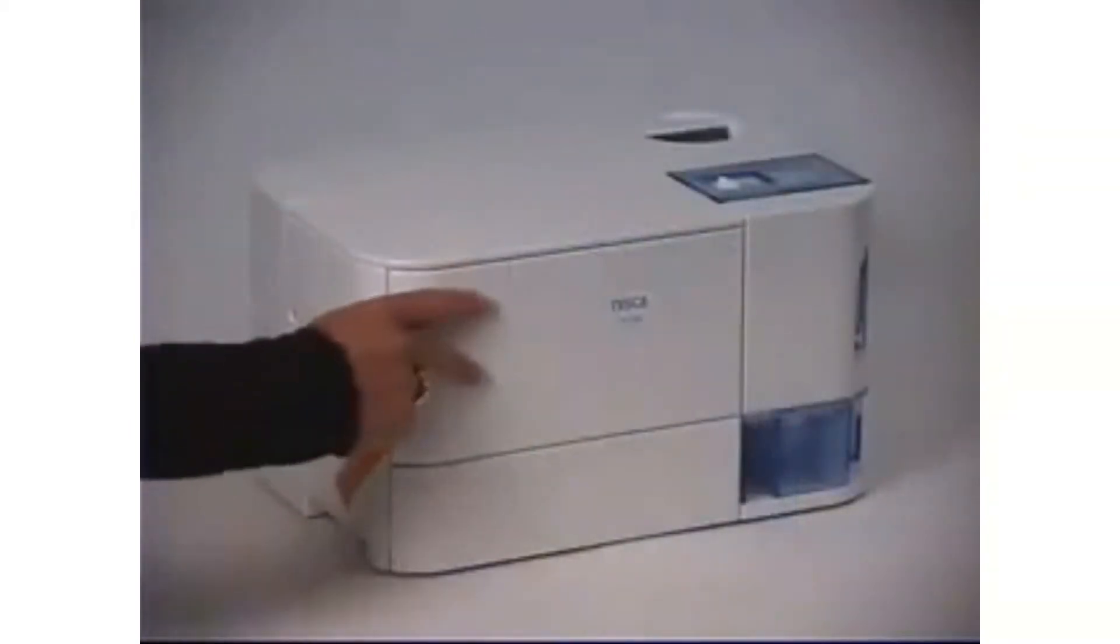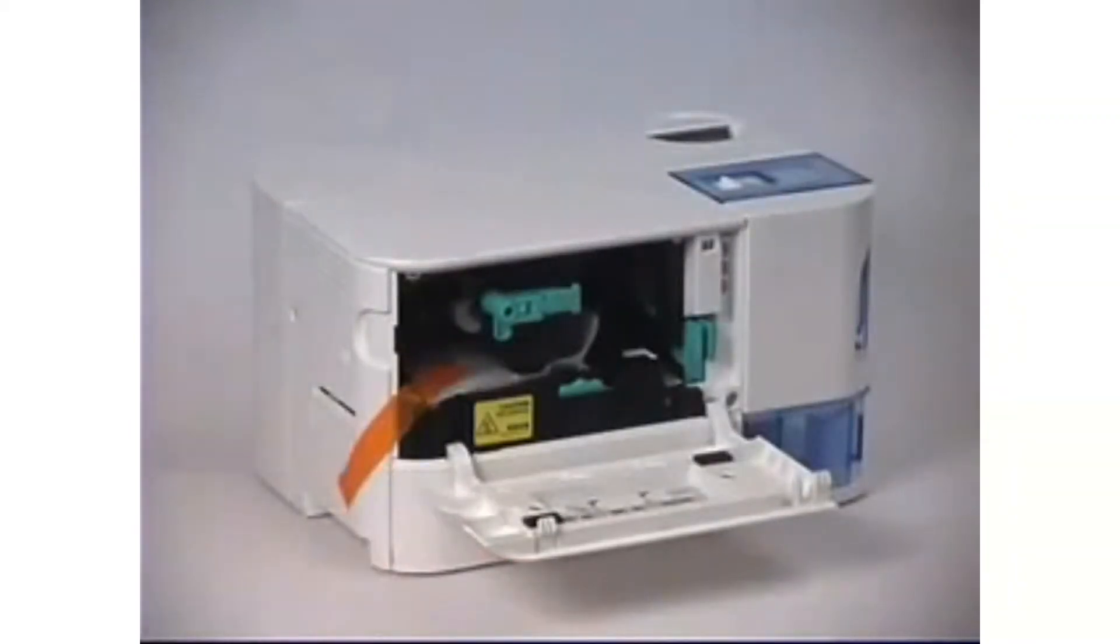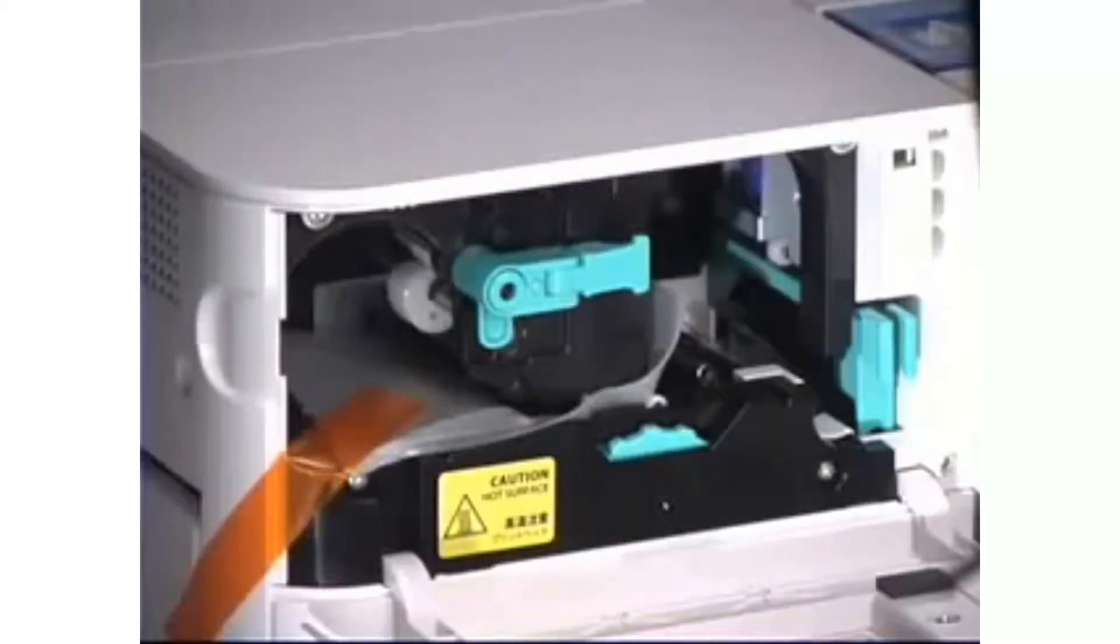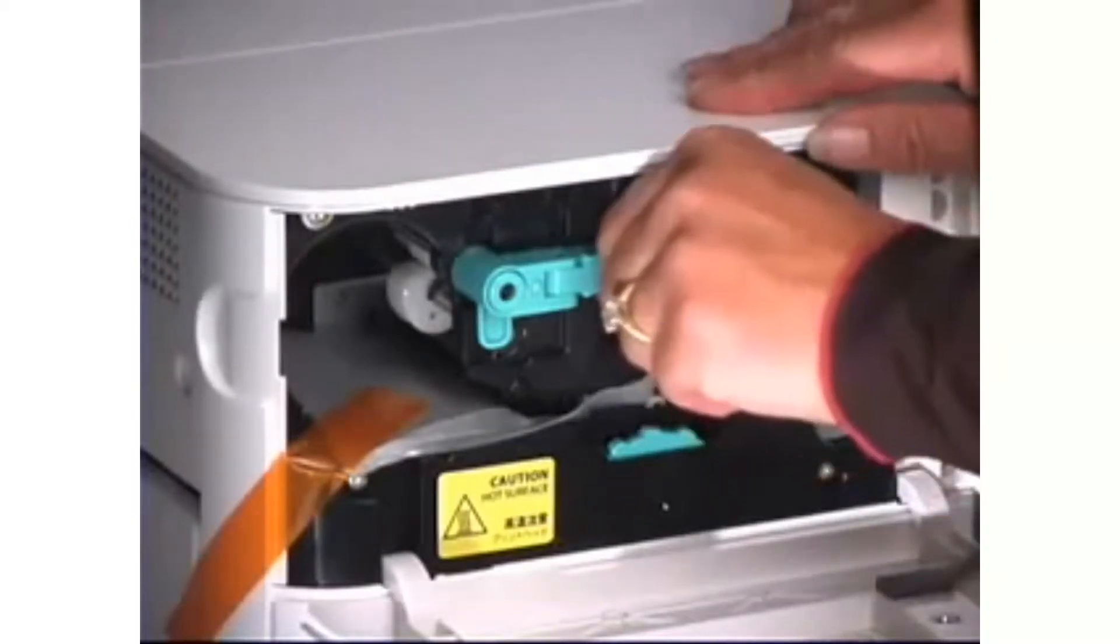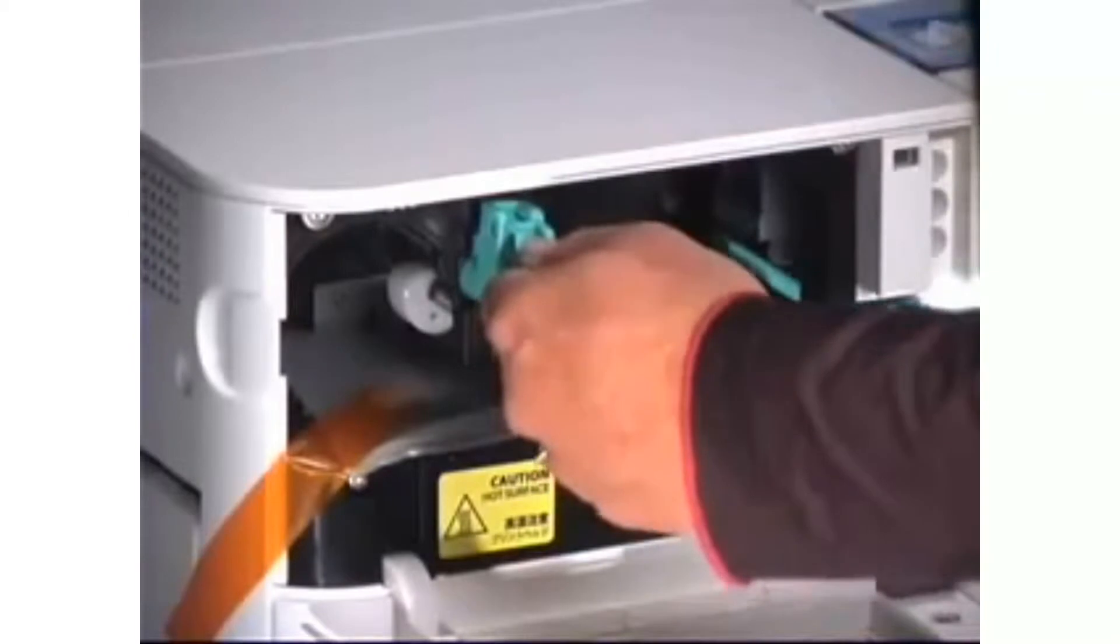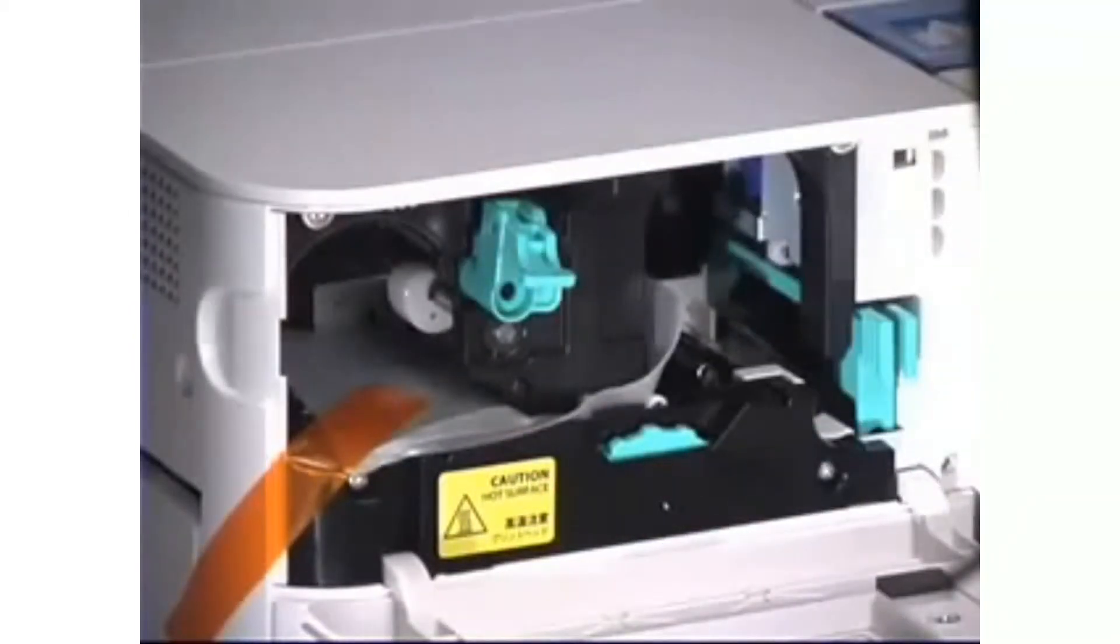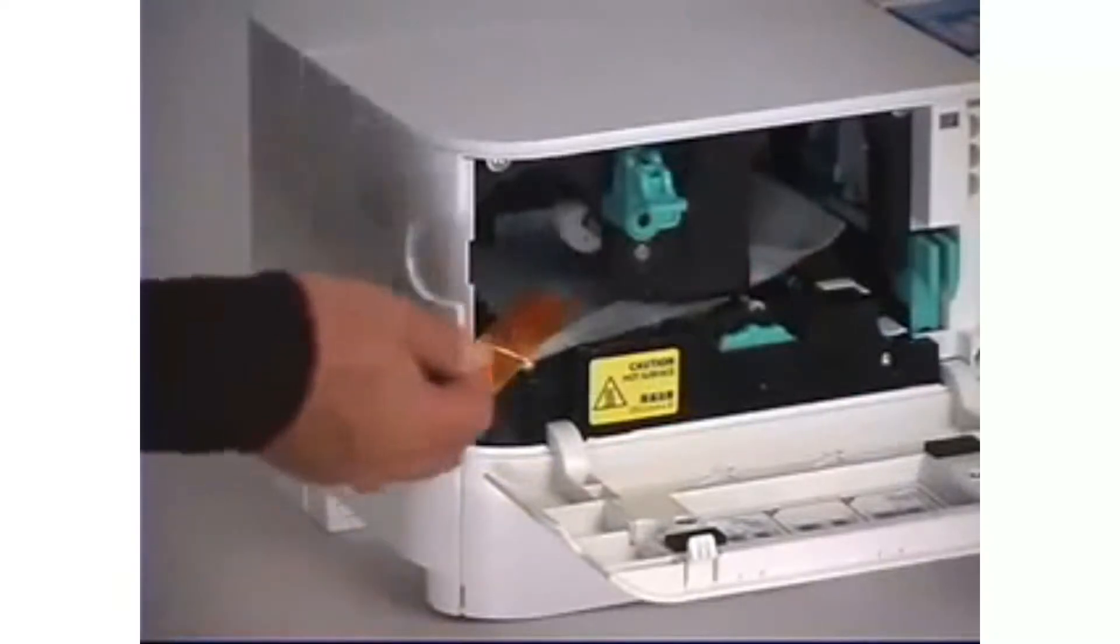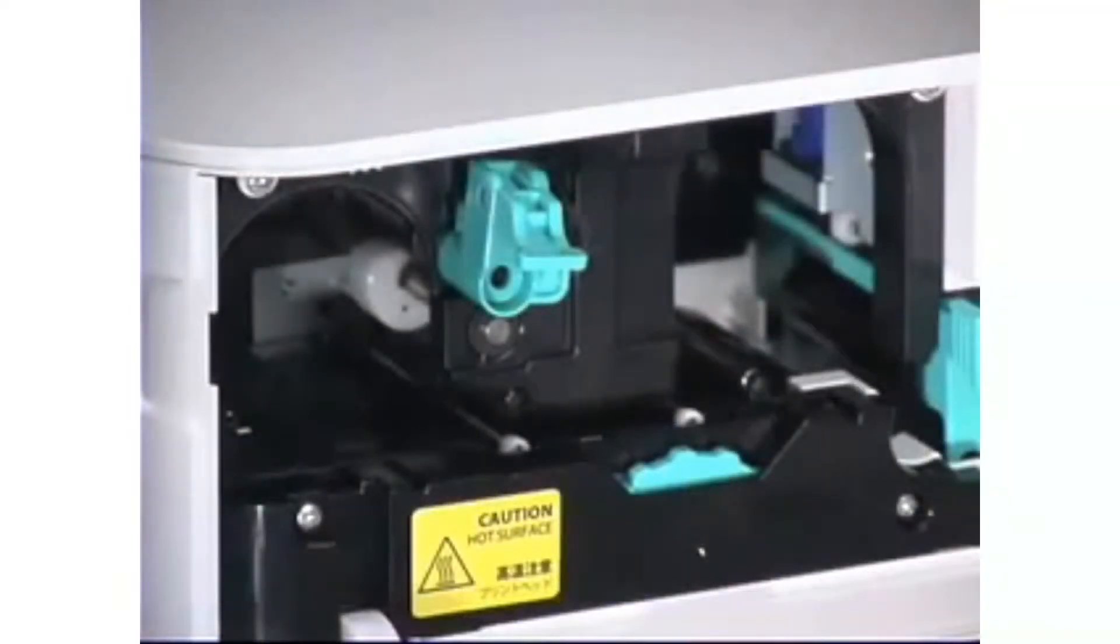To remove the protective print head foam, open the ribbon door. To disengage the print head, fold the locking tab of print head release lever to your left, and while pulling on the lever, rotate it counterclockwise until the lever is in a vertical position. Once the print head has been disengaged, you may remove the protective foam.